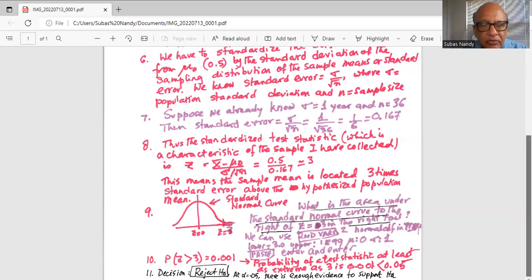So we get the probability of z greater than 3 is 0.001. So this is the probability of getting a test statistic as extreme or at least as extreme as 3.0, which is 0.001, which is less than 0.05.